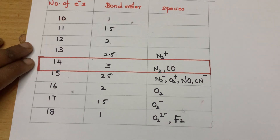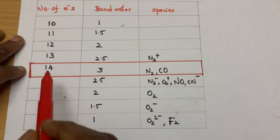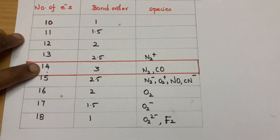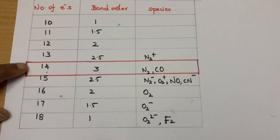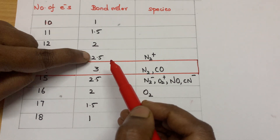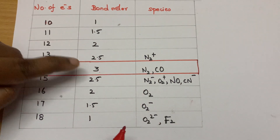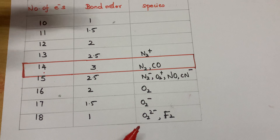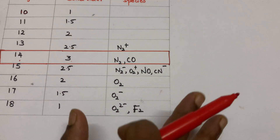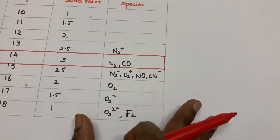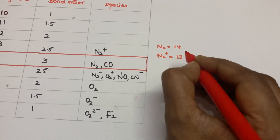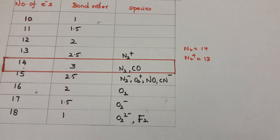Now here is the trick. Look at the number of electrons, bond order, and species. Remember: 14 electrons corresponds to nitrogen with bond order 3. Going away from 14, subtract 0.5 each time: 13→2.5, 12→2, 11→1.5, 10→1. It is symmetric on both sides. You just have to remember 14 gives bond order 3, and decrease by 0.5 on either side. N2⁺ is 13 electrons, so bond order is 2.5. Carbon monoxide: 6 plus 8 equals 14 electrons, so bond order is 3. Cyanide ion CN⁻: 6 plus 7 plus 1 equals 14, so bond order is also 3.